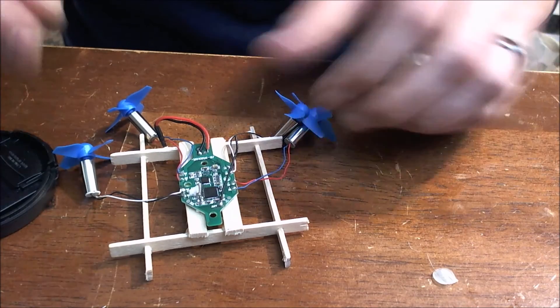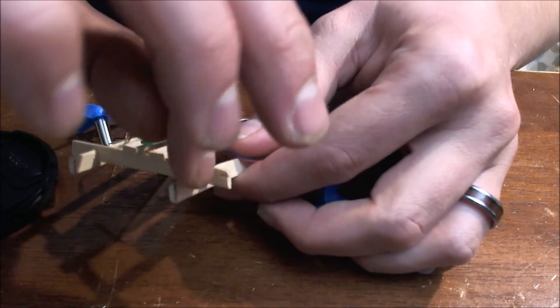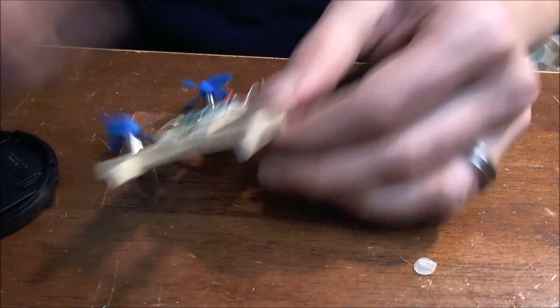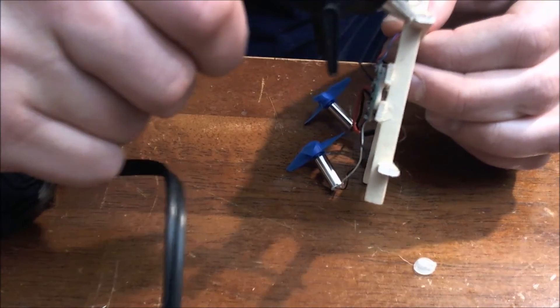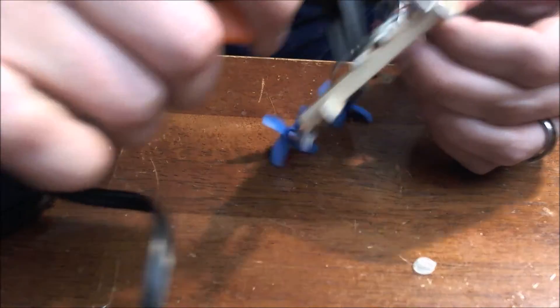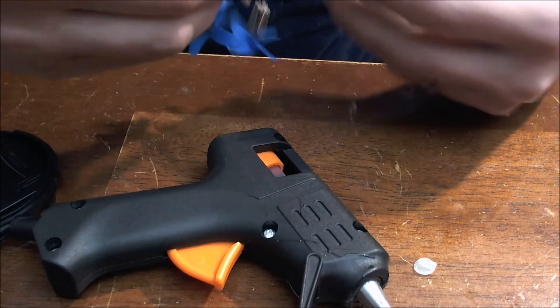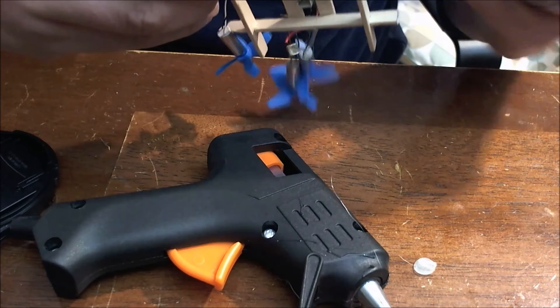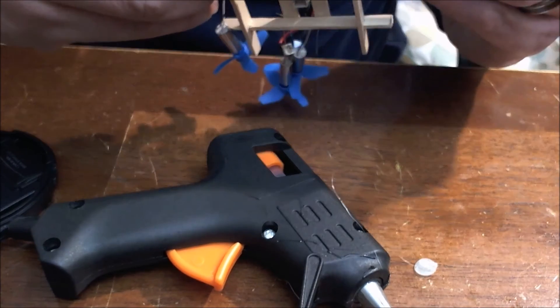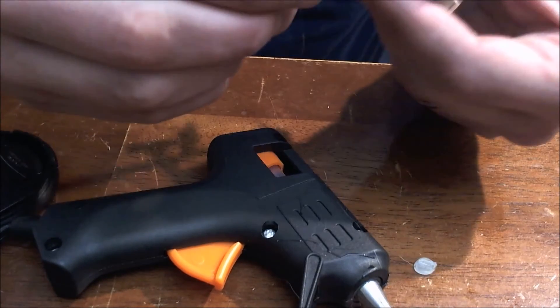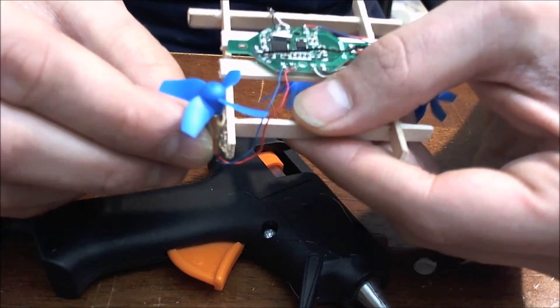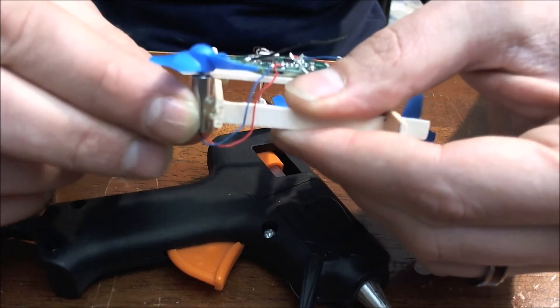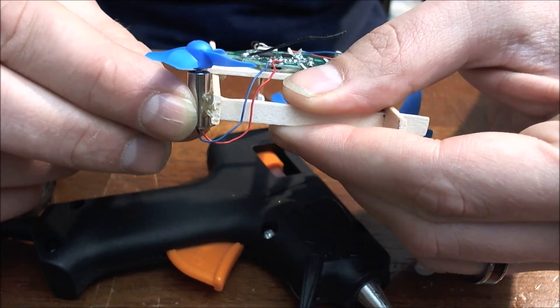So now what we're going to do is we're going to run a bead of glue right down the corner of these here and then we're going to set our motors on. Now you want to be very careful when you do this part because you want to make sure that the motors are straight up, that they're not tilted. So what we're going to do is just kind of eyeball this again. Make sure it's sitting in there nice.